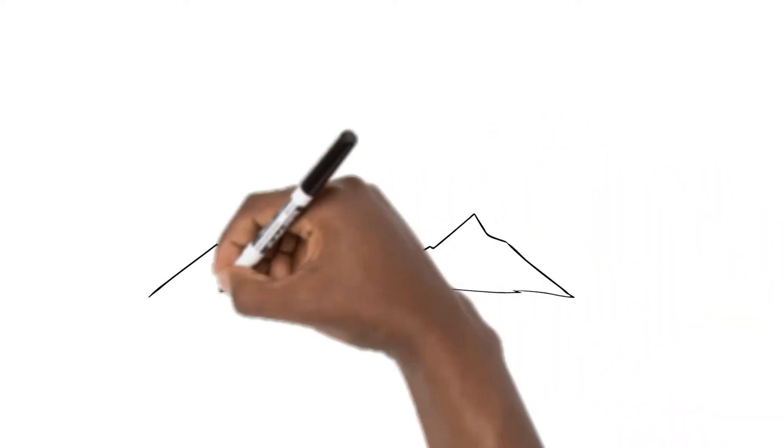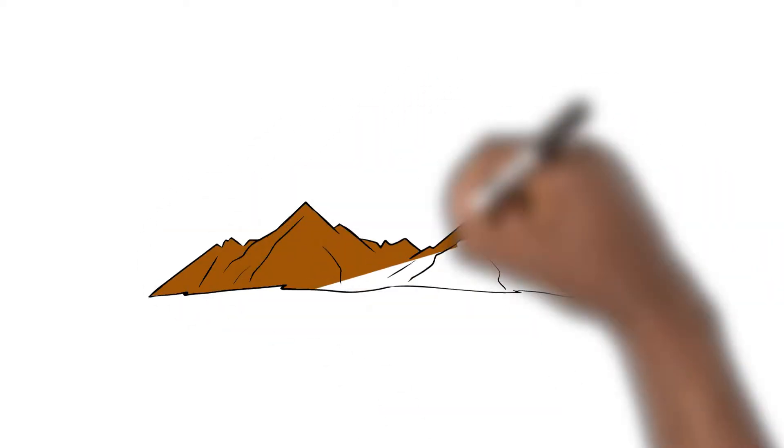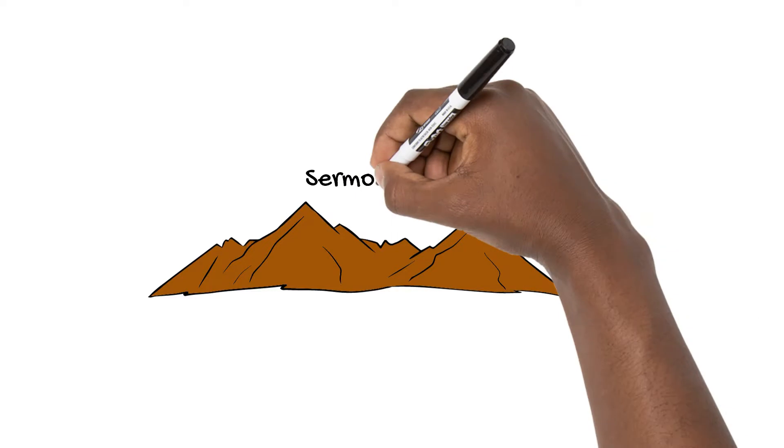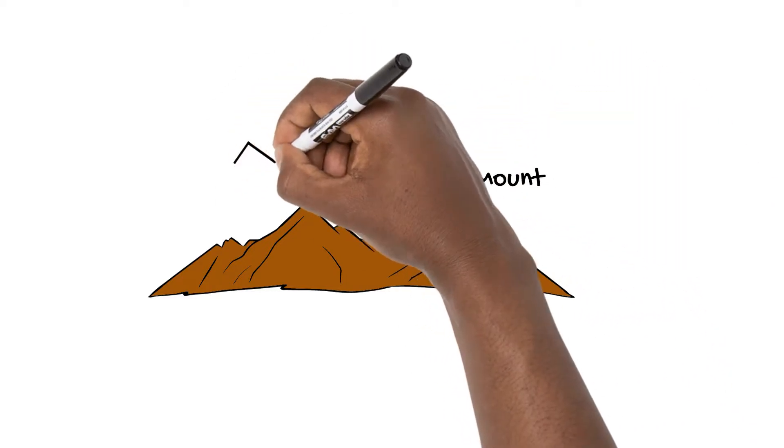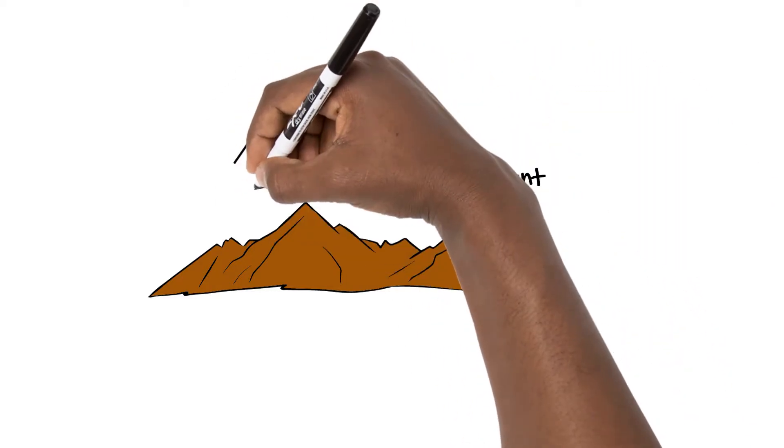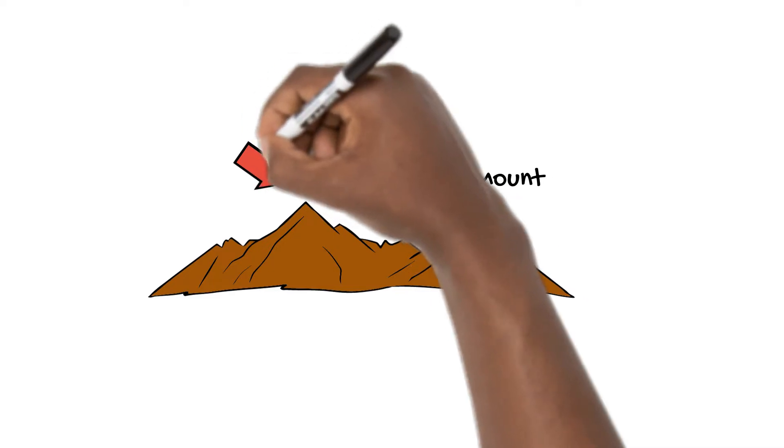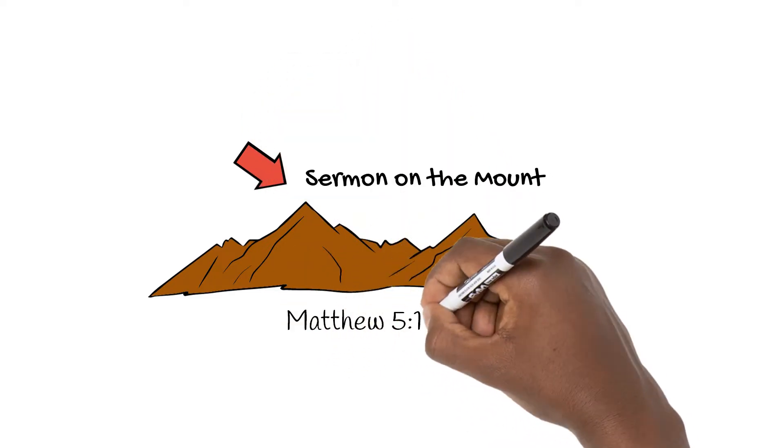So for today's lesson, it takes place with Jesus preaching on a mountain which became known as the sermon on the mountain. This is where Jesus discussed eight blessings called the Beatitudes. This is in Matthew chapter 5 verses 1 through 12.